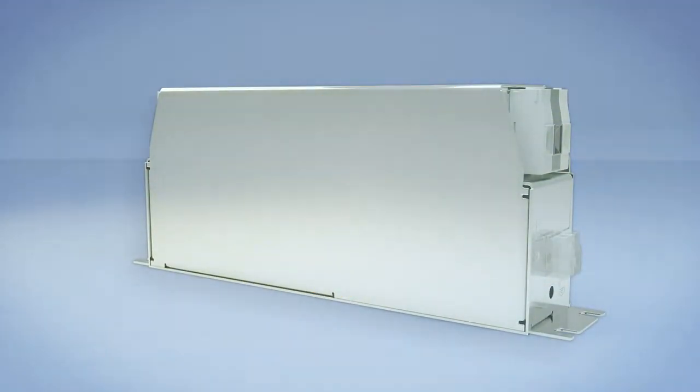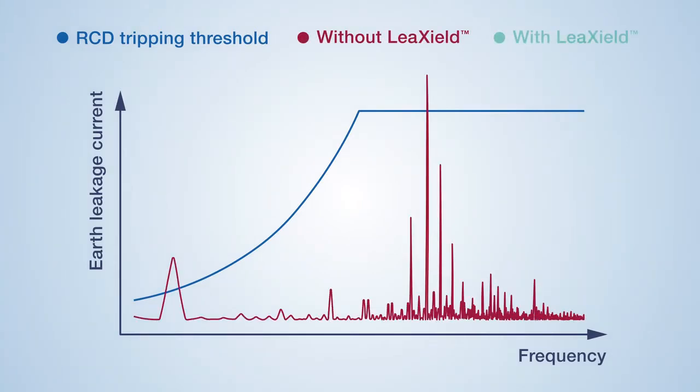LeakShield reduces earth leakage currents below the RCD tripping threshold, preventing unintentional tripping and machine shutdown.